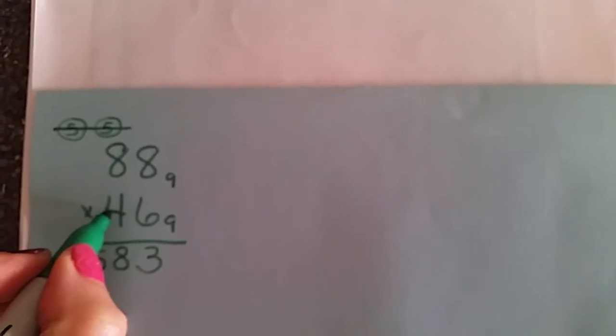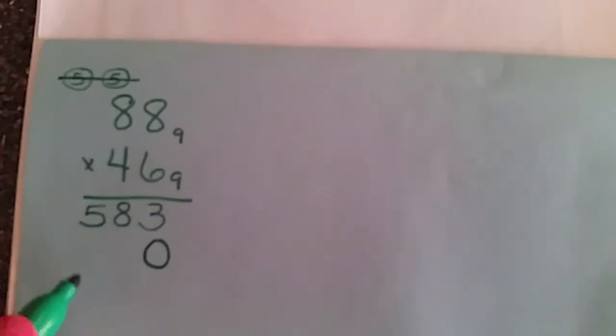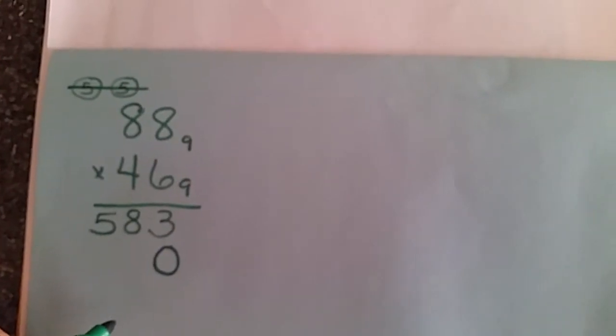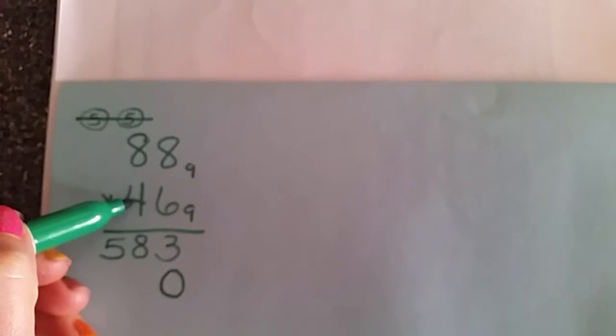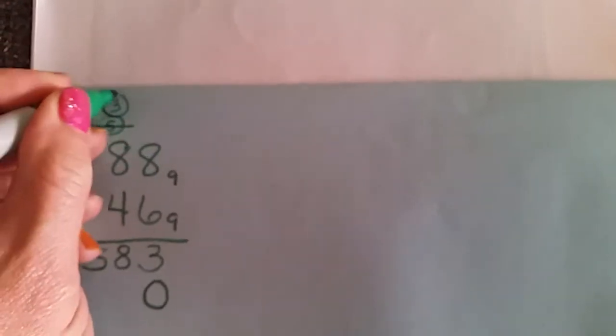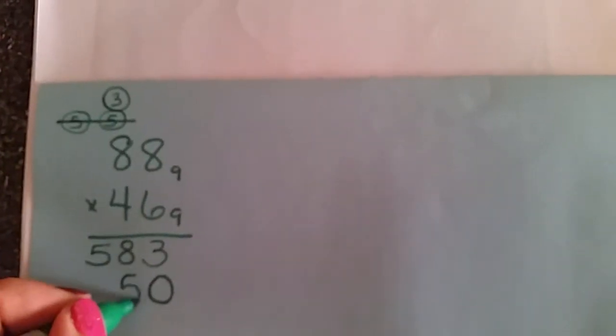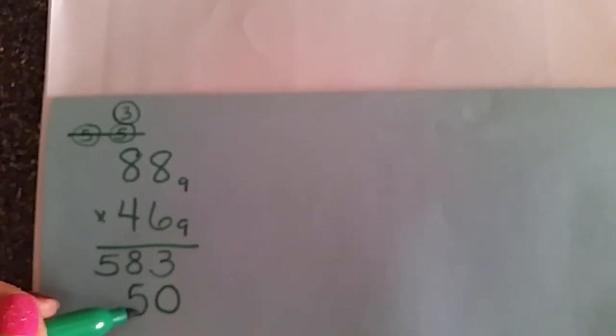So now we're going to begin multiplying 9's times 1's and 9's times 9's, which means that we're over in the next place value. So we're going to bump our answer over one place value. So 4 times 8 gives us 32. Now 32 would be 3 groups of 9 and 5 leftovers, because that's 27 plus 5 would be 32.